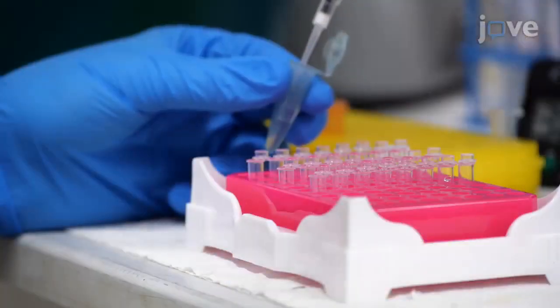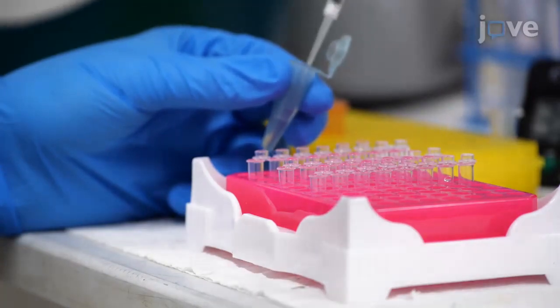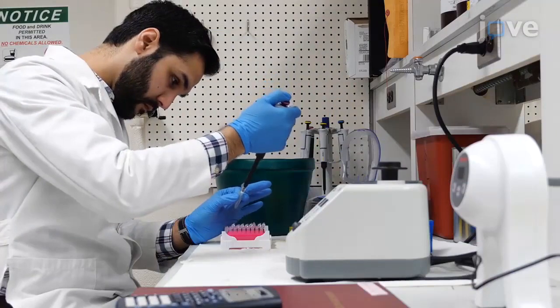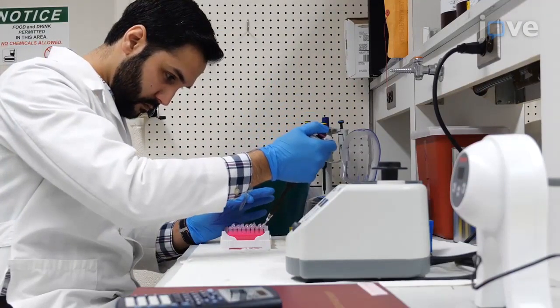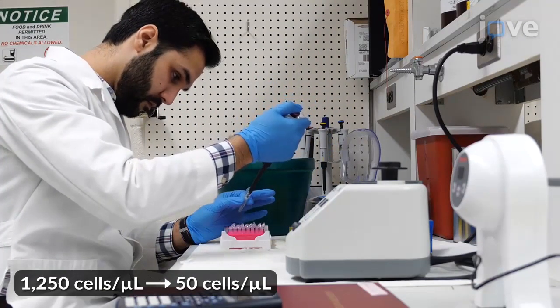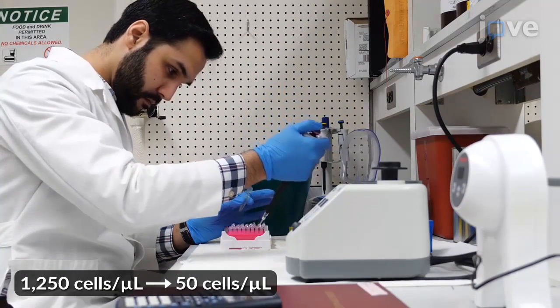After the cell lysis, pipette 48 microliters of extension master mix into each PCR tube. Add 2 microliters of diluted lysate to each PCR tube to reach a final cell equivalence of 50 cells per microliter and continue the telomerase extension reaction according to the manuscript.